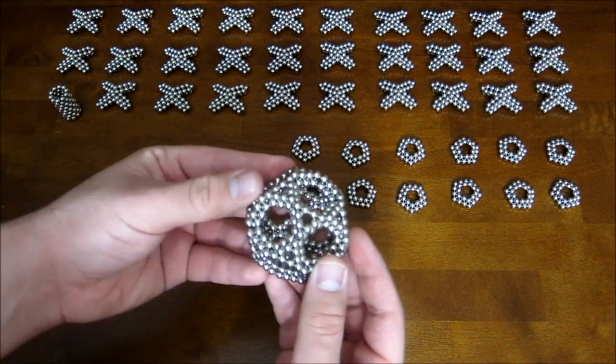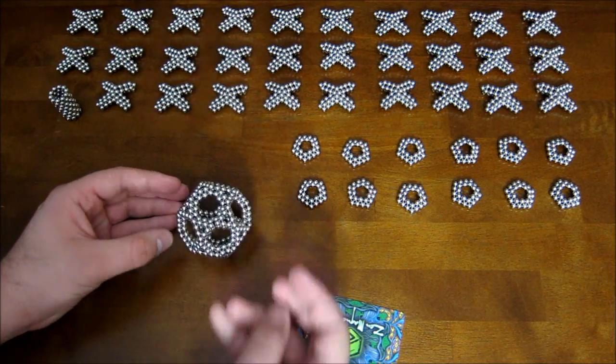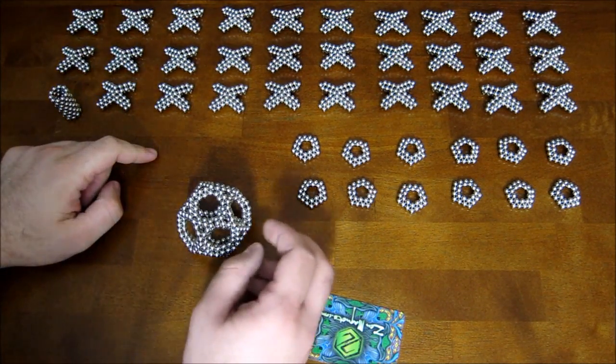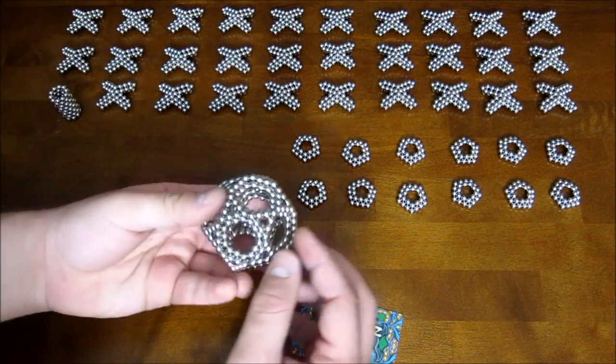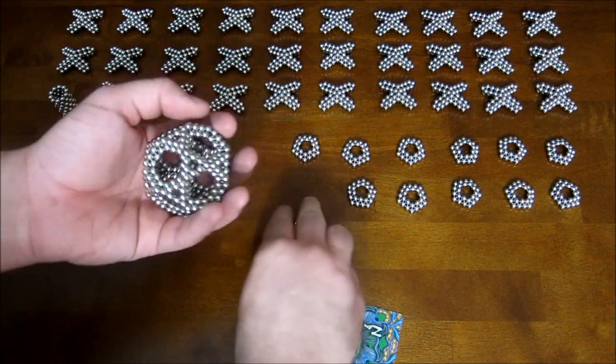And so you end up with this, which is, I guess, technically already an icosododecahedron, but it wouldn't be the same kind as what I would build with these other subunits. And it's not very stable either. So,